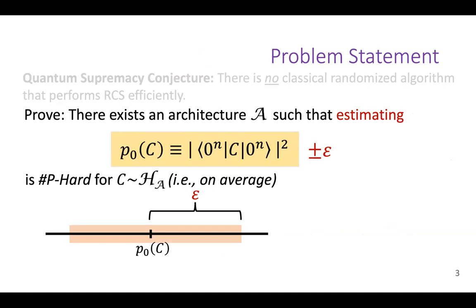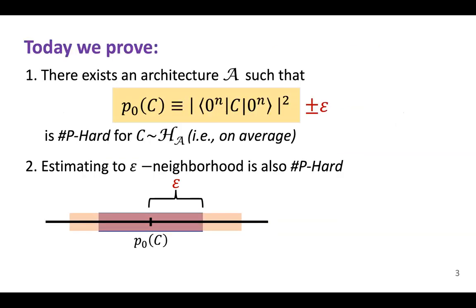What we need is something a little bit more. So not only that this point is hard, but the whole epsilon neighborhood around it is hard. And that epsilon has a very particular value that I'm tactfully masking right now because I don't want to introduce too many terminologies, but there's a very specific number for epsilon for which one has to show the whole interval centered around P0 of C is sharp P-hard.